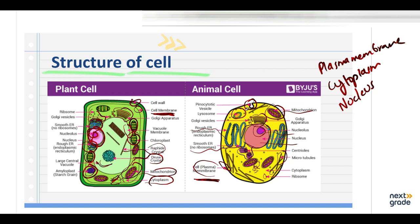So there are some structures that are common to both plant and animal cells. However, they do contain some structures that are specific to each — plant cells have their own set of structures, and animal cells contain their own set of structures.